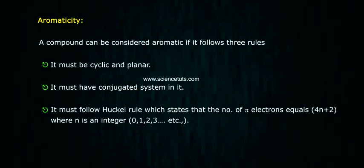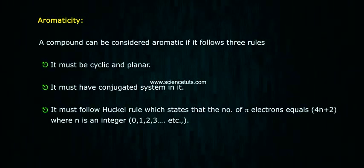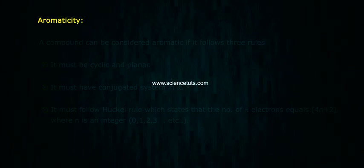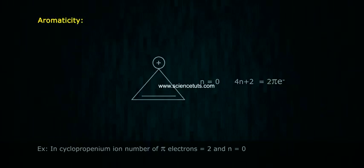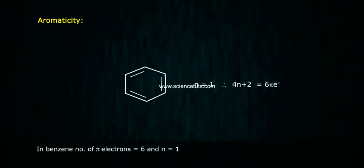Hückel's rule states that the number of pi electrons equals 4n + 2, where n is an integer 0, 1, 2, 3, etc. In cyclopropenium cation, the number of pi electrons equals 2 and n equals 0. In benzene, the number of pi electrons equals 6 and n equals 1.